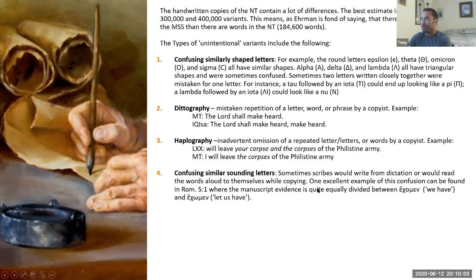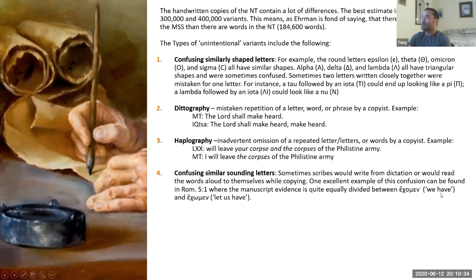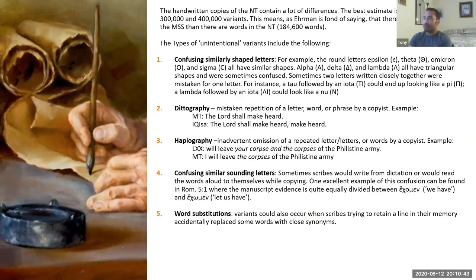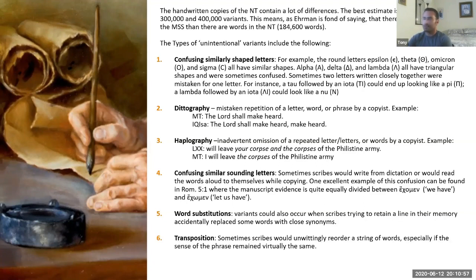Another unintentional variant involves confusing similar-sounding letters. Sometimes scribes would write from dictation or read aloud while copying. A good example is Romans 5:1, where the manuscript evidence is divided between 'echomen' — 'we have' — and 'echomen' — 'let us have.' They sound exactly the same but one has an omega and one has an omicron, which does change the meaning. There are also word substitutions, where a scribe accidentally replaces words with close synonyms or paraphrases.